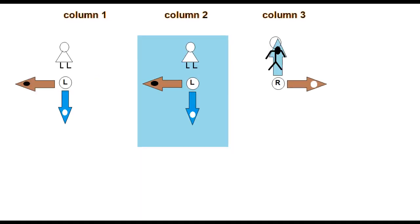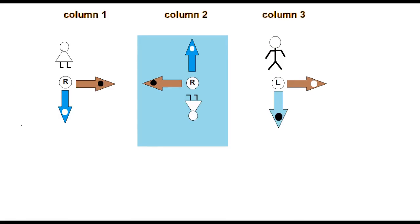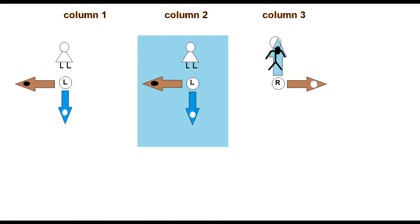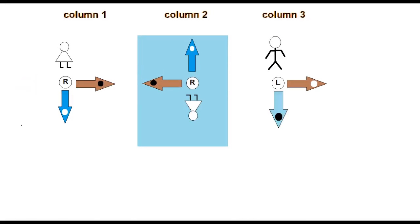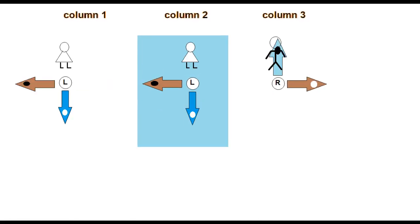Notice that whenever Bob's particle is chirally left-handed, Alice's is chirally right-handed, and vice versa. Taken together, columns 1, 2, and 3 show how chiro-temporal correlation is preserved, even when entanglement is not.